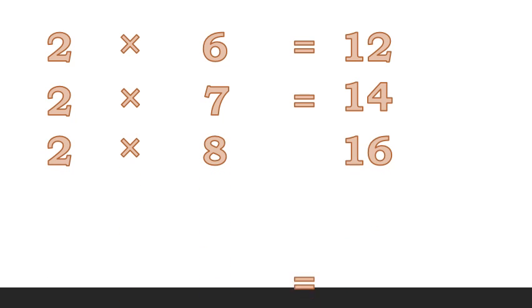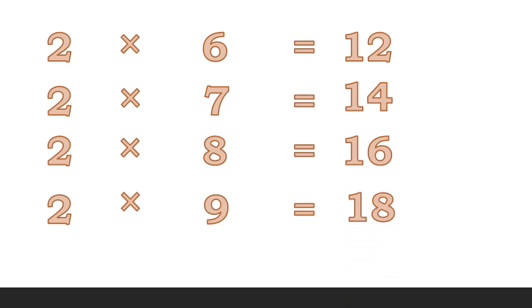Two eights are sixteen. Speak with me — two eights are sixteen. Two nines are eighteen. Speak with me, children — two nines are eighteen.